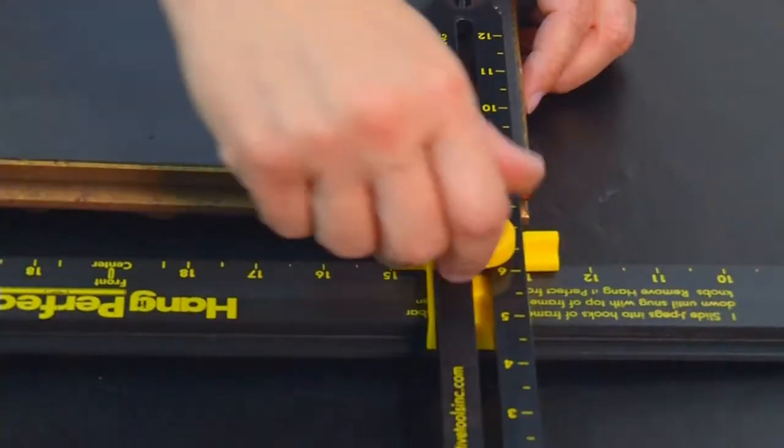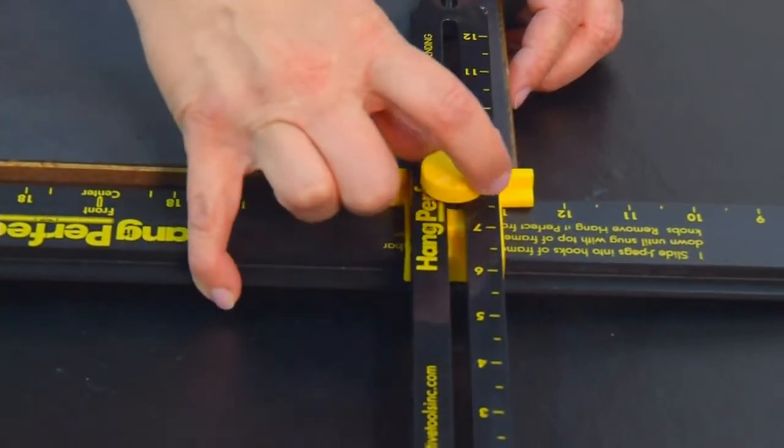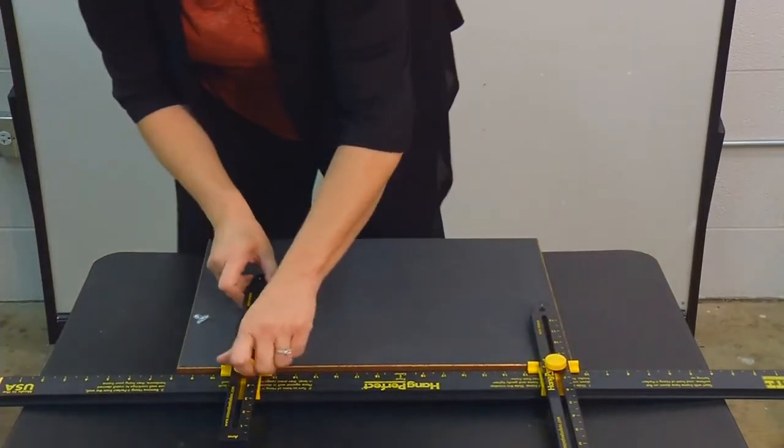Simply slide the JPEG in, pull the crossbar down and snug. Repeat on the other side.